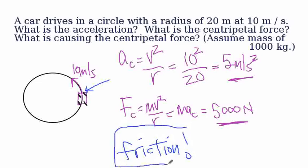The moon going around the Earth — it's gravity that's the centripetal force, the centripetal agent. If you tie a rock to a string and twirl it in a horizontal circle, the tension of the string is the centripetal force. Those are a couple of examples for you.